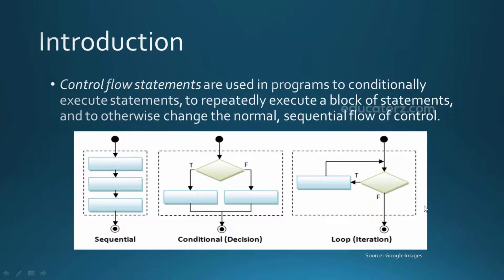If you observe the first image on the screen, it represents sequential flow. This is a flow diagram of a program with three actions — action one, action two, and action three. In sequential flow, after action one is executed the code moves to action two, then after successful execution of action two it moves to action three. This happens in sequential order with no control over the code.